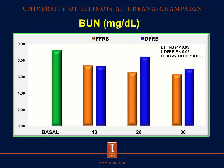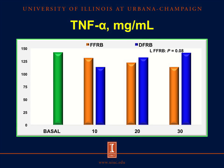The concentration of BUN decreased as the inclusion level of full fat rice bran or defatted rice bran increased in the diets. The concentration of BUN was greater in pigs fed diets with defatted rice bran than in pigs fed diets containing full fat rice bran, which can be explained by the reduction in feed intake mentioned before. Also, we observed a linear tendency to decrease the concentration of TNF-alpha in pigs fed diets containing full fat rice bran, but no effects were observed in pigs fed diets with defatted rice bran.